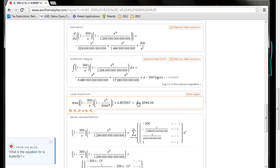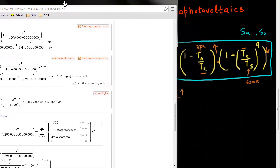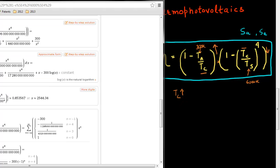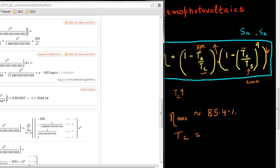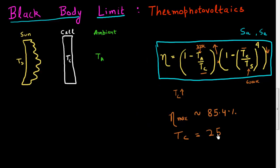This maximum occurs when X is 2544.34 Kelvin. So the maximum value of efficiency is approximately 85.4 percent, and this maximum occurs when the temperature of the cell is 2544 Kelvin.